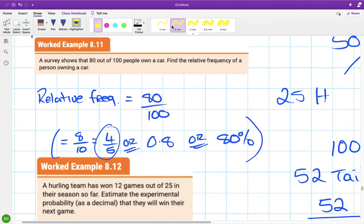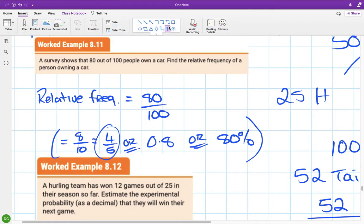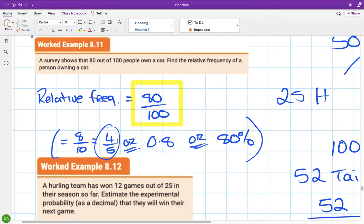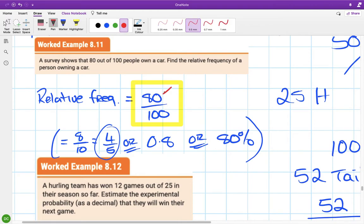The original answer is absolutely perfect: 80 out of 100 people own a car, so the relative frequency of owning a car is 80 over 100. When you're doing relative frequency, it's the event you're interested in, which in this case is owning a car, and the bottom is the total. So how many people did they ask? All you have to do is create that fraction. You can simplify that fraction or write it as a decimal or a percentage, but I'll say it again, you do not have to.